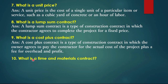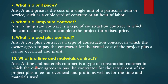Question 10: What is a time and material contract? A time and material contract is a type of construction contract in which the owner agrees to pay the contractor for the actual cost of the project plus a fee for overhead and profit, as well as for the time and materials used.